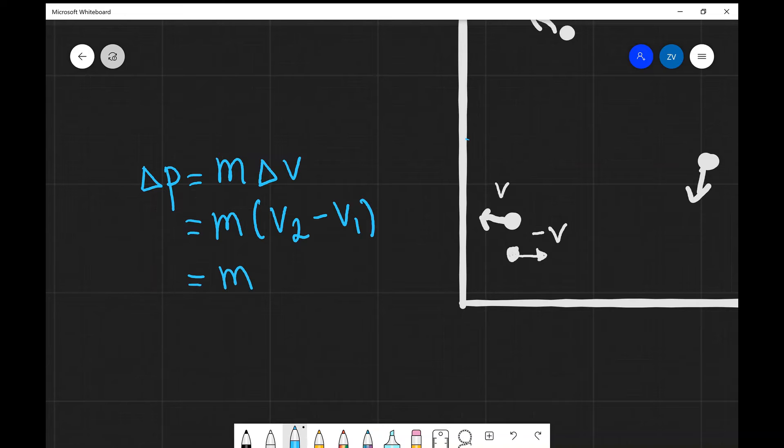This is going to equal the mass. Now our final velocity in this case is actually minus V, so we could just say minus V over here. Our initial velocity is actually V, so we need to take away the initial velocity, which is V, which means that the change of momentum is going to be minus 2mV.